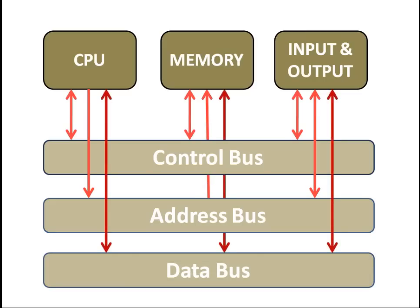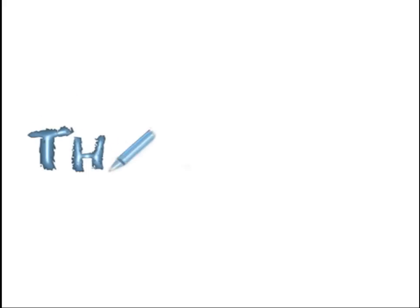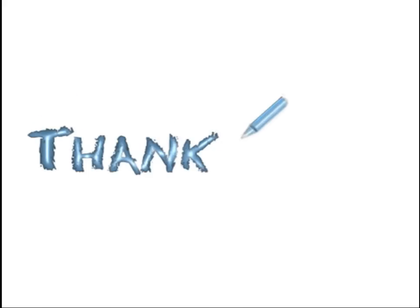The data bus is the most common type of bus. It is used to transfer data between different components of the computer. The number of lines in the data bus affects the speed of data transfer between different components. Well, that's all for today — thank you for watching.